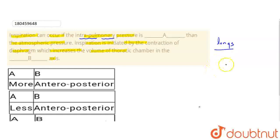is less than the atmospheric pressure. We will talk about the pressure. There is a negative pressure in the lungs.